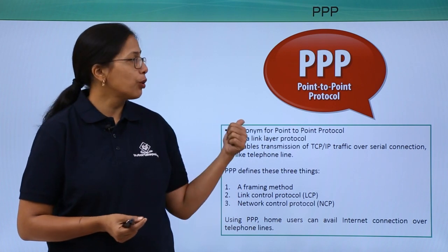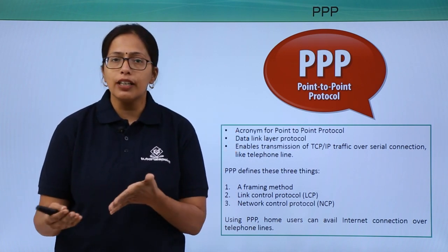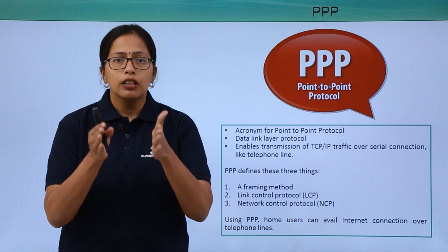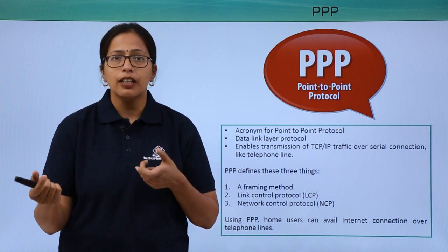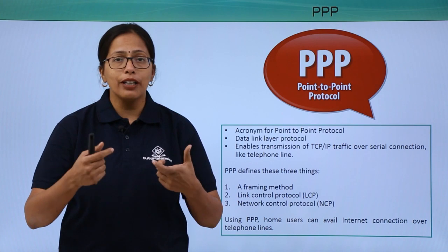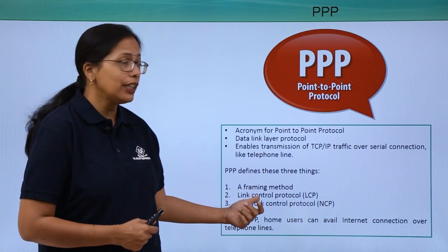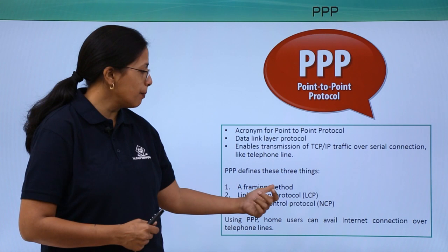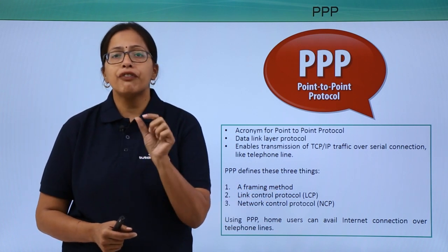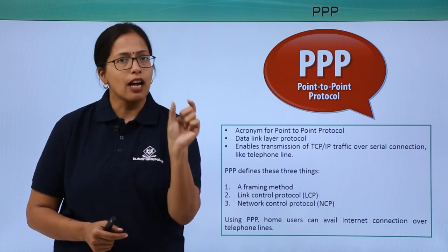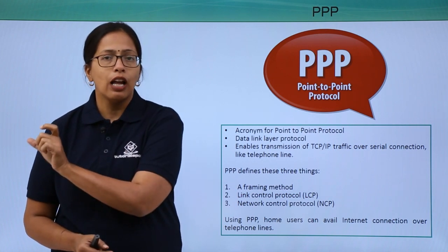The PPP Point-to-Point Protocol has to maintain an equilibrium between packet switching and circuit switching. This is achieved through three definitions. The first is a framing method — PPP provides a framing method so that the start of the frame and the end of the frame are clearly defined.